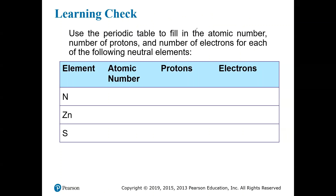Here we have a chart with some elements, and it's asking us to fill in the atomic number, the number of protons, and the number of electrons. For a question like this, you definitely need the periodic table. On any exam, you'll be given the periodic table in this course, so you should get used to consulting it for situations like this.